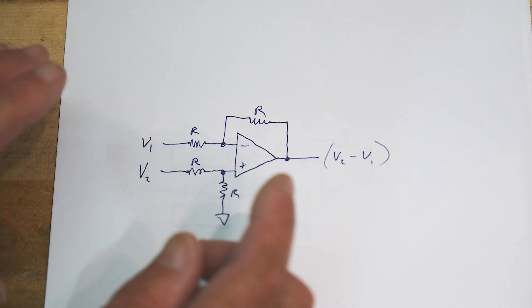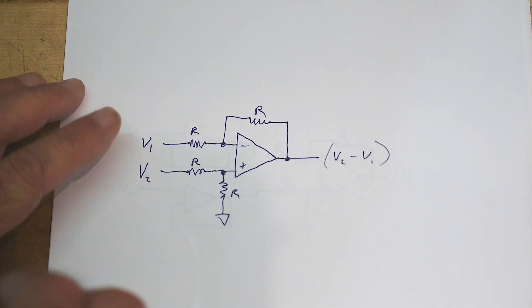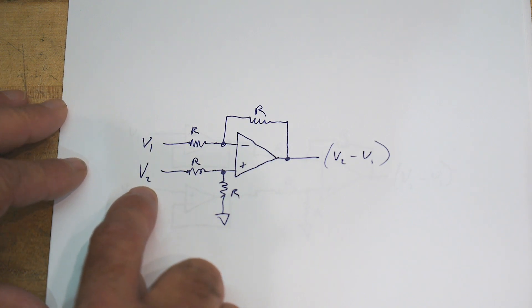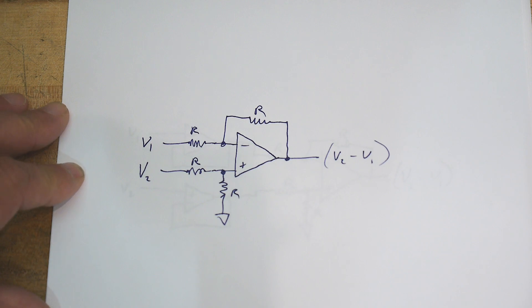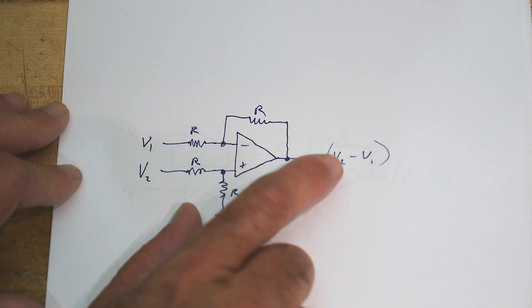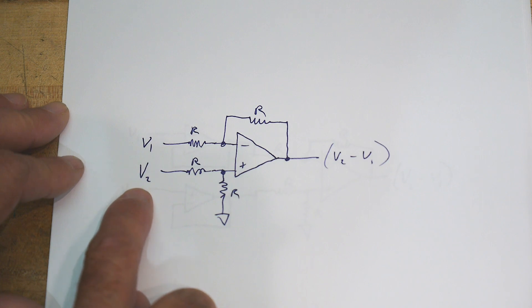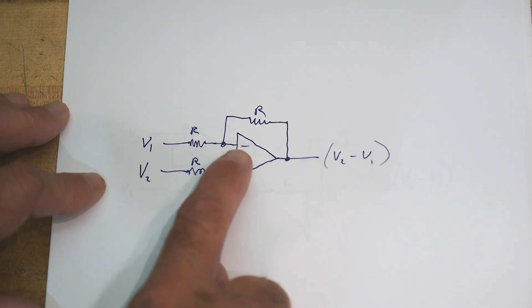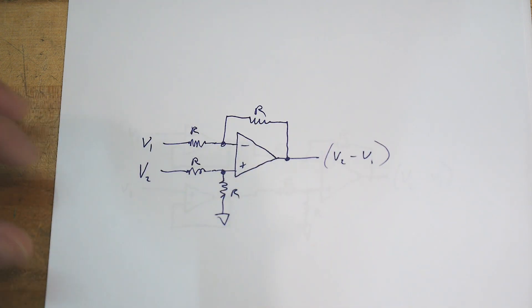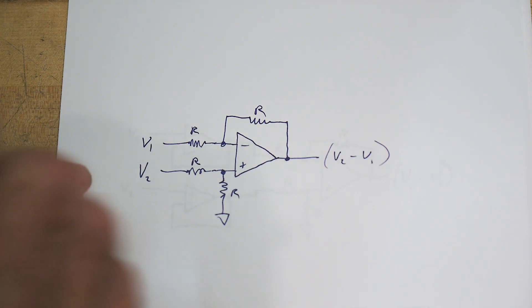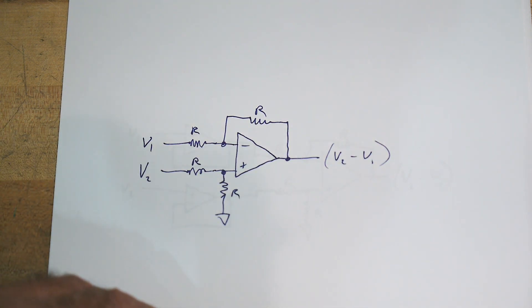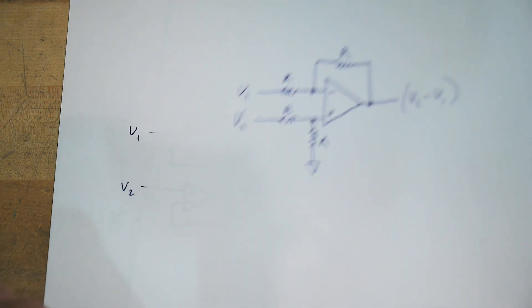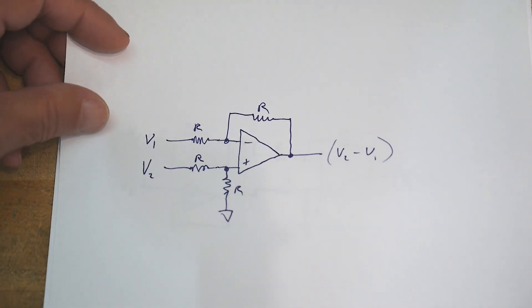If you take a look at the circuit and all these resistors are exactly the same value, the output will be voltage 2 minus voltage 1. Voltage 2 is going into the plus input, voltage 1 is going into the minus, so you get voltage 2 minus voltage 1. This is called a difference amplifier. You can do this with any op amp, but one of the problems with the circuit is the input impedance.